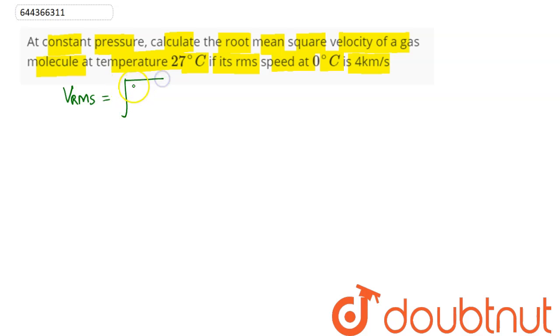Here we can say that RMS speed of a gas molecule is given as square root of 3RT divided by molecular weight M. Now we can see it says constant pressure and at temperature 0 speed is 4 kilometer per second.